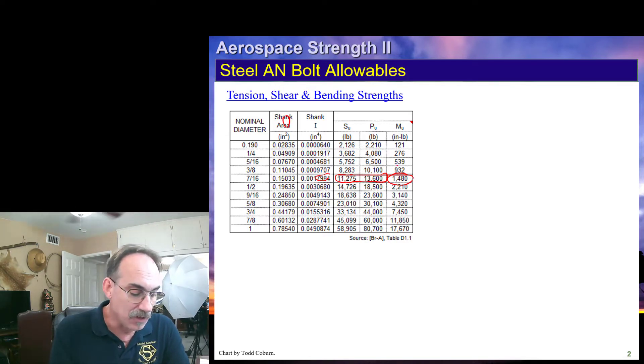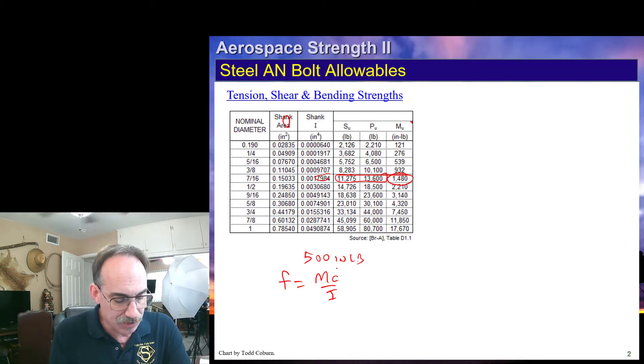Now if we want to evaluate whether a bolt is okay, let's say we have a 500 inch pound moment applied, there's a couple ways we could evaluate that. One would be calculate the stress based on the applied moment, MC over I, where C is just half your diameter, and I is I of the bolt, and then compare to your FTU. Another way is just to write a margin of safety on the moment allowable, called MU for M ultimate, divided by the moment minus 1.